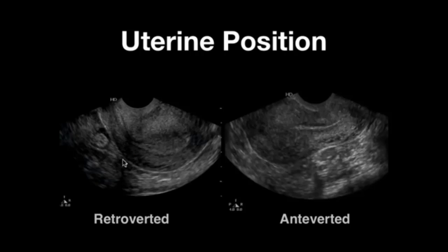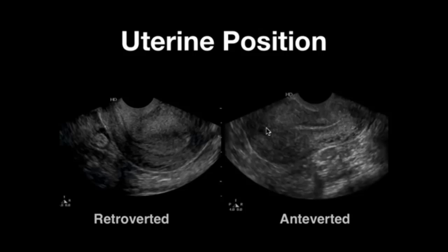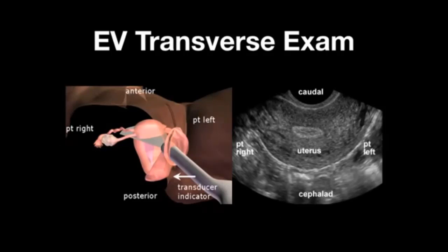Comparing two patients: on the left is a retroverted uterus — following the endometrial cavity from the lower uterine segment, you can see it courses in a posterior direction. On the right is an antiverted uterus — following the endometrial stripe up to the fundus, it courses in an anterior direction. For the endovaginal transverse or coronal exam, rotate the transducer indicator from the 12 o'clock position — thumb toward the ceiling — to the 9 o'clock position, with the indicator directed toward the patient's right thigh.